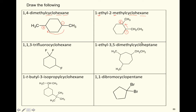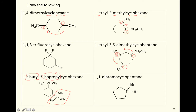1-ethyl-3,5-dimethylcycloheptane: a seven-membered ring with the ethyl on carbon one, and methyl groups on carbons three and five — once you choose a direction, maintain it for the whole molecule. 1-t-butyl-3-isopropylcyclohexane: t-butyl and isopropyl are groups we memorized earlier in the semester, and this gives us an opportunity to see how they are used in naming.